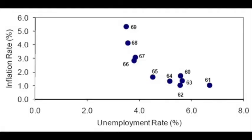Once the public figures out what's going on — that the inflation rate is higher — then unemployment will go back to where it was. But for a period of time, presidents were using this as a way to decrease unemployment, and for quite a few years it moved right along the Phillips curve as we would expect.